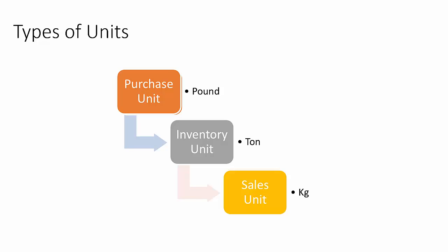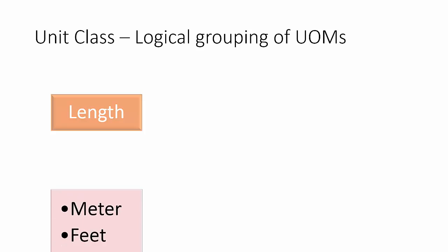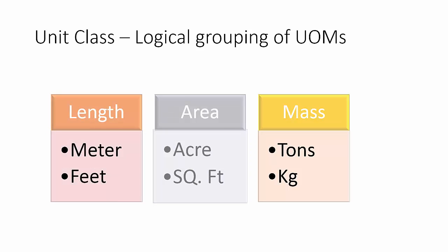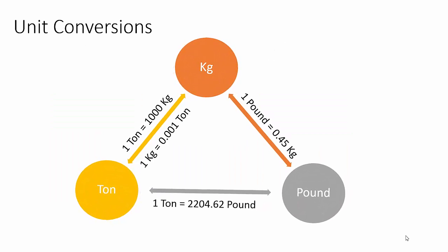A user can specify the same or different unit of measurement for purchase, inventory, and sales, but a conversion must exist between these units if they are different. Let us understand what a unit class is. A unit class represents a logical grouping of units of measure such as area, mass, or length. For example, meter and feet belong to the length unit class, and various tons and kg belong to the mass unit class.